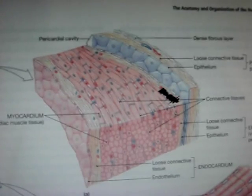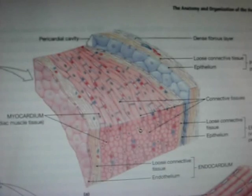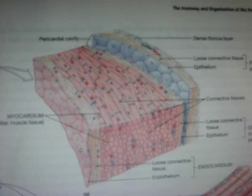Now, back to the endocardium. It consists of loose connective tissue and also has a wall of epithelium protecting it. The myocardium is a little bit different — it has cardiac muscle tissues, connective tissues, blood vessels, nerves, and intercalated discs. More on that later. Back to the endocardium — it's loose connective tissue and another layer of endothelium. Quick note: this is where the valves would be.